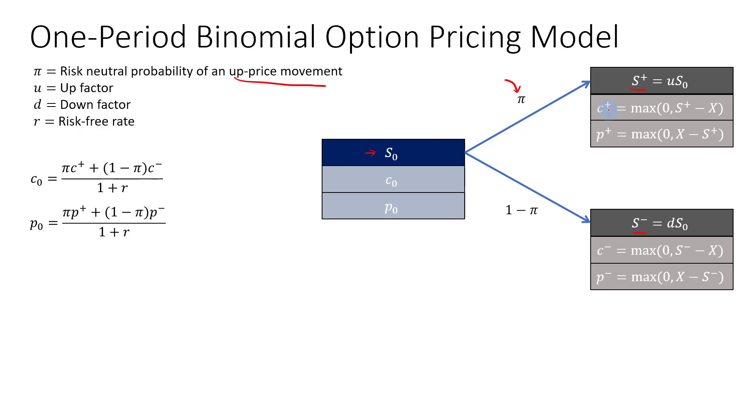Then we'll calculate the payoff of the option. It could either be a call or a put option. And then we will multiply the option payoff to the risk-neutral probability. So for pi, we will multiply it to the call option payoff for the higher share price, S plus. And for one minus pi, we will multiply it to the payoff when the share price moves downward. And then once you take the weighted payoff, then we will discount it at R, the risk-free rate. So that will give us the option price.